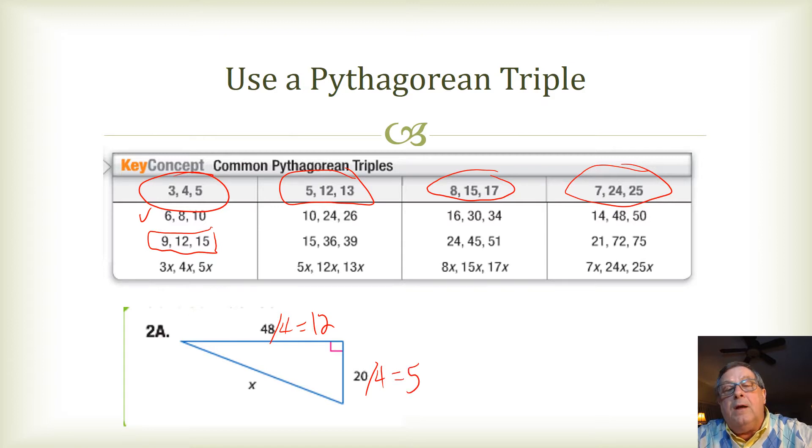And then I can see here that this fits a Pythagorean triple of 5, 12, and this is a right angle. And so, it would fit this Pythagorean triple of 5, 12, 13.